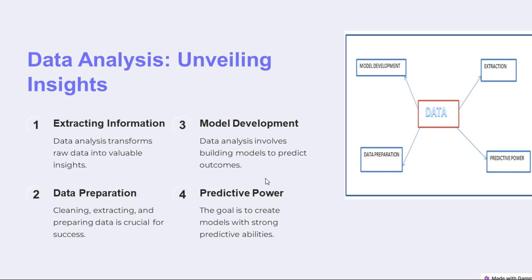The third step is model development. Data analysis involves not just getting or processing data, but also generating a model. Model development is actually a translation of the data into a mathematical form of the system under study — a representation in mathematical or logical form describing the system upon which you can make predictions. The aim of data analysis is making predictions, and predictive power depends on both the model and choosing a very good data set.